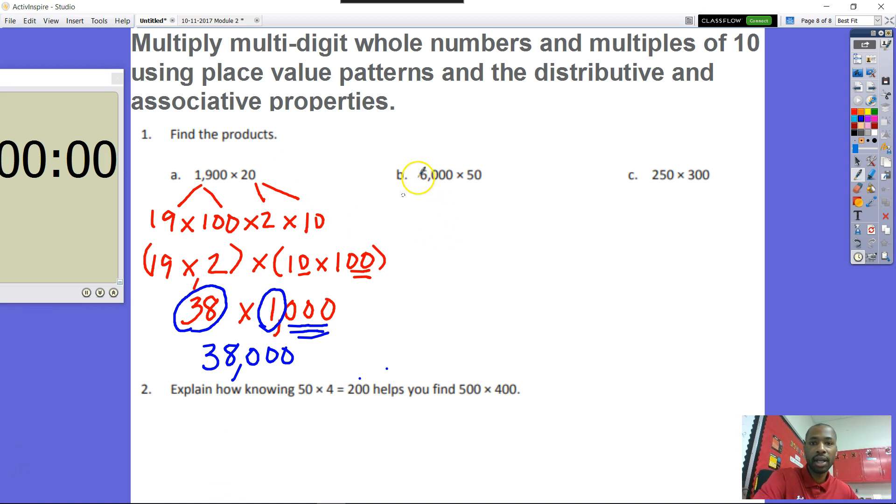All right, with that being said, let's go ahead and quickly do the next one. All right, so moving on to B. Now we have 6,000 times 50. Same thing, same situation here. We're going to go ahead and isolate our main numbers here, 6 and our 5. So we're going to say, I'm going to skip this step here. I'm not going to do this step. I'm going to say 6. Let's go ahead and put it here. 6 times 5.